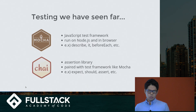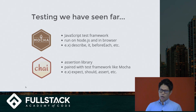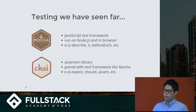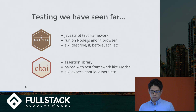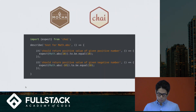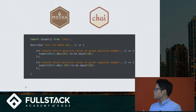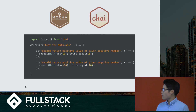So for testing, we have seen so far these two libraries: Mocha and Chai. Mocha is a JavaScript test framework, and Chai is an assertion library. Mocha provides APIs like describe, it, and before each, and Chai provides expect, should, or assert.